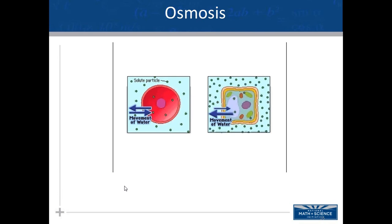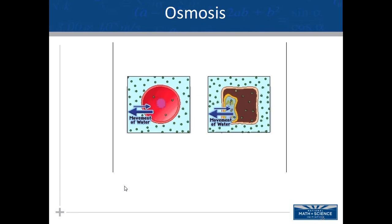When plant cells are exposed to hypertonic environments, water rushes out and the cell shrinks away from the rigid wall — these cells are dehydrated and lose most physiological function. If cells are returned to isotonic or hypotonic environments, water re-enters and normal functioning may be restored. Animal cells lack rigid cell walls. When exposed to hypertonic environments, water rushes out and the cell shrinks. Returning cells to isotonic or hypotonic environments allows water to re-enter and restore normal function.